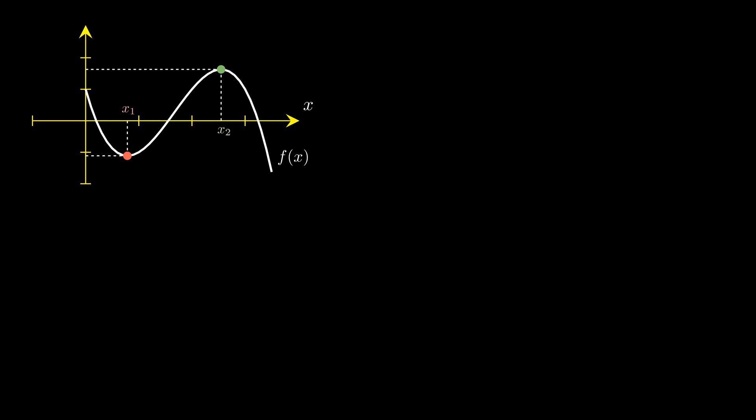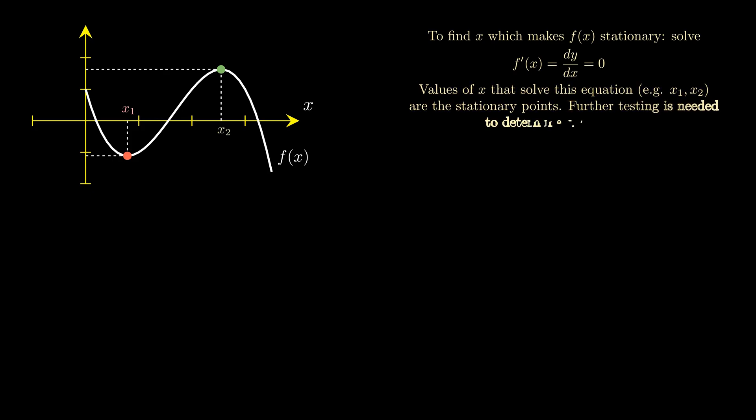Well if you remember from calculus 1, in order to find these stationary values, you take the derivative of the function and set that derivative to 0. Then the values of x which satisfy f'(x) = 0 are those same values that make the function stationary.